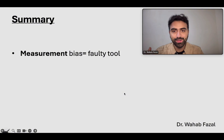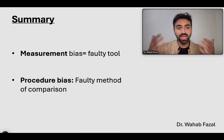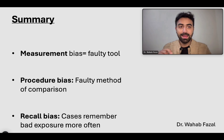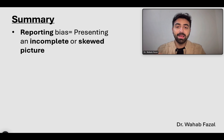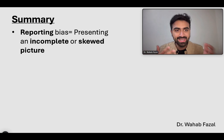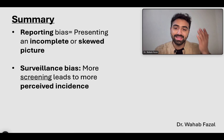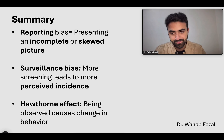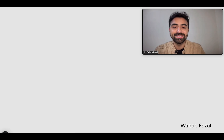Summary: Measurement bias — faulty tool. Procedure bias — faulty method of comparison; you treated the intervention and control groups very differently. Recall bias — people who developed negative outcomes remember the negative exposure really well. Reporting bias — presenting an incomplete or skewed picture of the results. Surveillance bias — if you screen some people more, the odds of finding disease in that group is very high, leading to increased perceived incidence. Hawthorne effect — being observed causes a change in behavior. That is all you need to know about information bias and its subtypes.